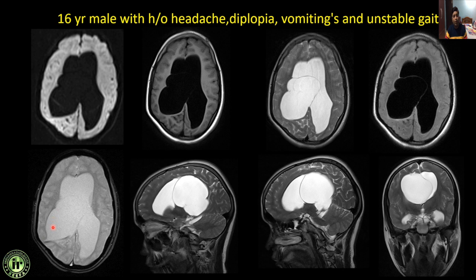There is no blooming on GRE and a VP shunt is in situ. Remember, T2-weighted images and FLAIR images are very crucial in identifying the membrane, which helps in differentiating normal hydrocephalus from intraventricular arachnoid cyst associated with hydrocephalus.